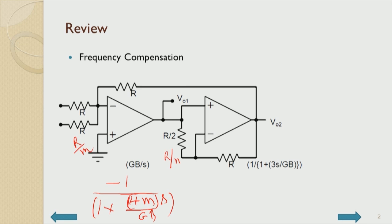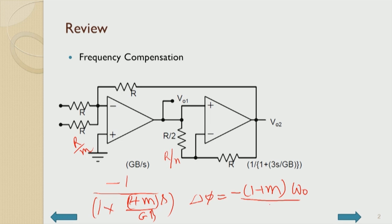This results in an additional lag error of (1 + M)·ω/GB, causing a phase error corresponding to δφ = −(1 + M)·ω₀/GB, evaluated at ω₀, the extreme frequency end of the band. That is the lag error caused by the op-amp gain bandwidth product.